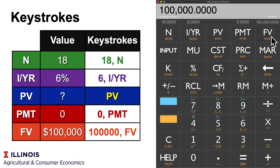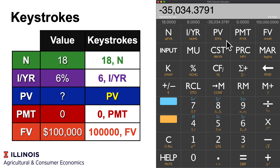Once we have that keyed in, we hit PV to see what the client would need to bring to the table today. PV should come in negative, and that means we need to deposit $35,034.38 into the account.